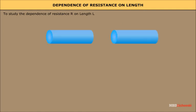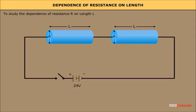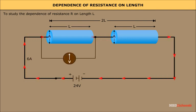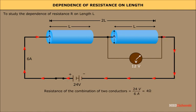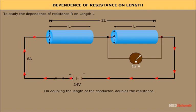To study the dependence of resistance R on length L, let us take two conductors of the same material, each of length L and area of cross section A, and align them one after the other, making total length 2L. The potential difference across each conductor is 12 volts, and the current through the combination is 6 Amperes, giving a total potential difference of 24 volts. The resistance of the combination is 24 volts by 6 Amperes, that is 4 Ohms. Thus, doubling the length of the conductor doubles the resistance.